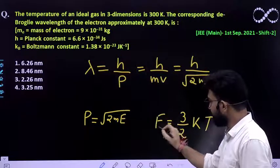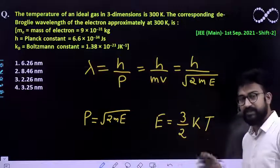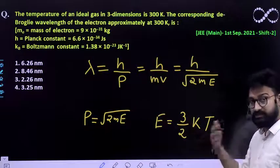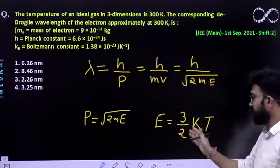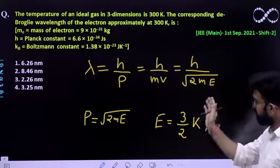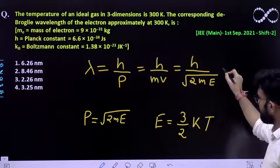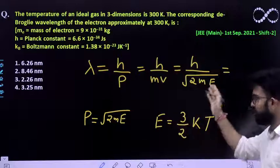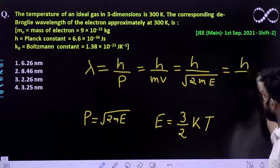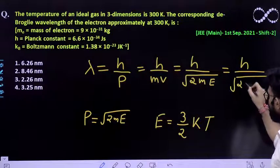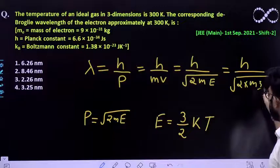So that means the average kinetic energy possessed by each particle is given by 3 by 2 KT. So you can easily write the value of E over here. So finally you will get this expression as 2m times 3 by 2 KT.